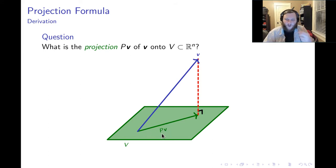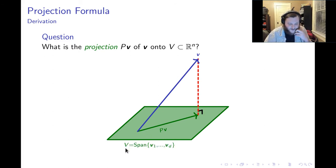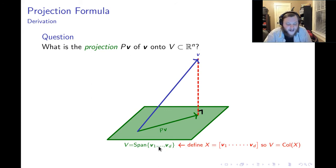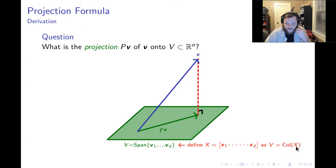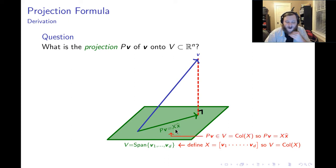Now the question is, what would the P matrix be in this process? Here's what we do. First, we start with a basis of the vector space. We rewrite V as the span of V1 through VD. Next, we take those basis vectors and put them into the columns of a matrix, which I call X. By putting those basis vectors into the columns of X, we know that the vector space V is the column space of X. And what does it mean for the projection P times V to be in the column space of X? That means P times V is some linear combination of the columns of X.